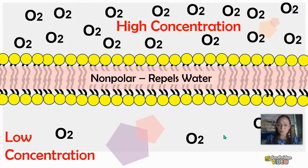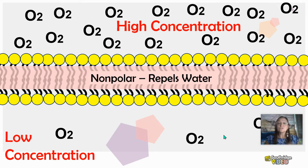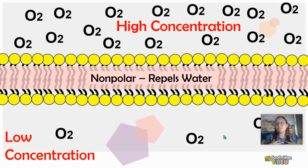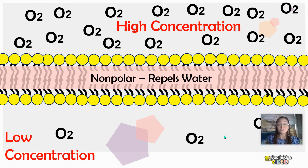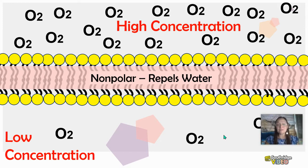It's also important to remember that molecules are in constant motion — they're always moving and colliding with each other. Here we have a cell with a high concentration of oxygen on the outside. Maybe the person just took a big deep breath, and now there's a high concentration of oxygen on the outside and a lower concentration on the inside. Oxygen is non-polar, and therefore, as these oxygen molecules are colliding with each other, they're able to pass right through the membrane.